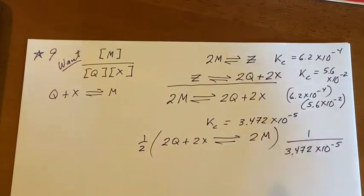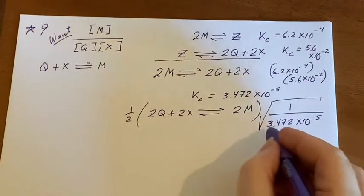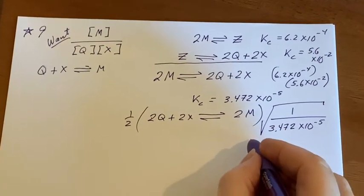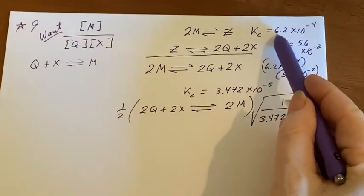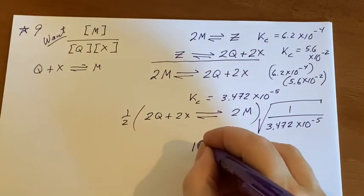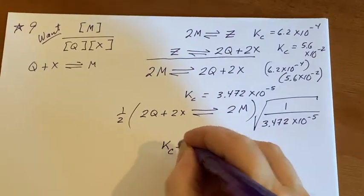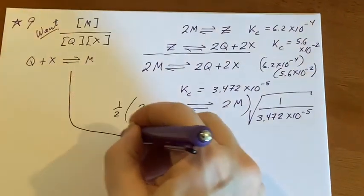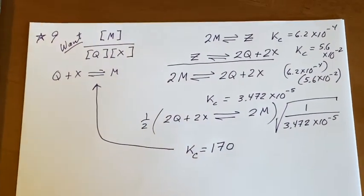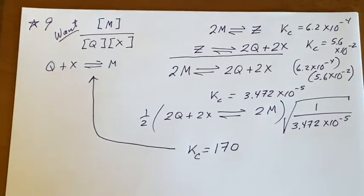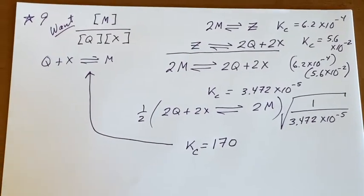Boom, square root. And when you get all done with the calculator and you round it back because you only have two sig figs to begin with, you're going to end up with 170 being the Kc for this reaction. So it's a matter of applying the steps and not getting lost. You have to do a few of them before you'll be comfortable with them.